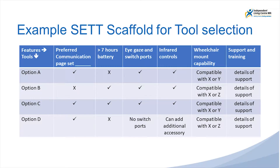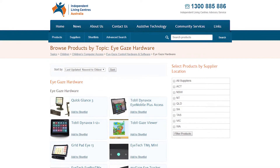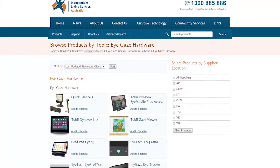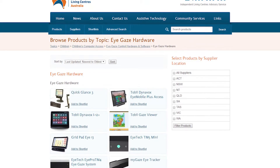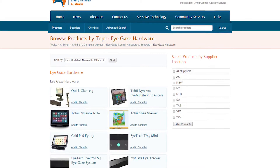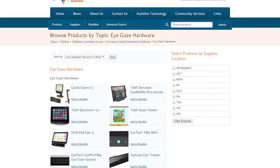Feature matching or selection guides are also available on some supplier websites. When the necessary features have been identified, they can be used to compare the different technology options available, along with the costs involved. The National Equipment Database can provide information about a range of iGaze hardware, software and mounting systems available, along with links to their suppliers.